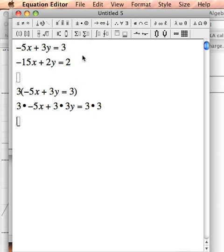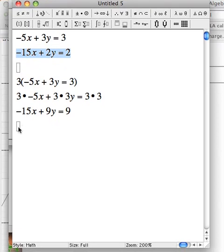Let's see what happens. 3 times negative 5x is negative 15x plus 3 times 3y is 9y equals 3 times 3 equals 9. And I'll type that second equation right underneath it.